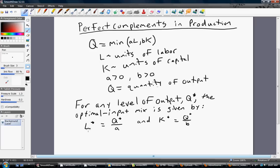The optimal units of labor, L star, is given by how many units of output you're interested in producing divided by that parameter A. And the optimal number of units of capital you want to use is Q star divided by parameter B. So you just need to remember this result here: Q star divided by A, and Q star divided by B, gives you the respective units of labor and capital.